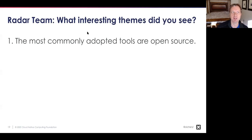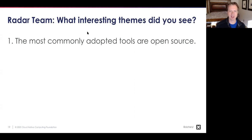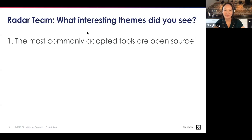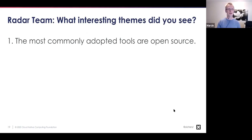Marcin says he was actually very surprised that so many organizations are running open source tools, probably at a bigger scale — it was either opposite to what the New York Times did, or those organizations hadn't yet reached the point where they had an opportunity to evaluate what they actually want to do, and just went with the flow: starting with Prometheus and Grafana and expanding as they grew.